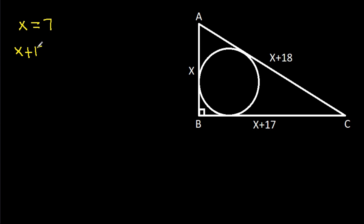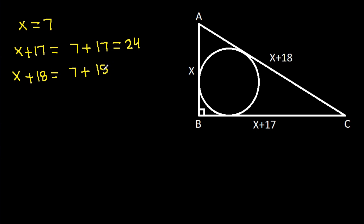With x = 7: BC = x + 17 = 7 + 17 = 24, and AC = x + 18 = 7 + 18 = 25.